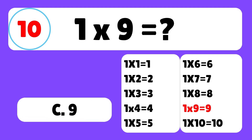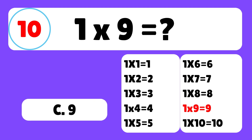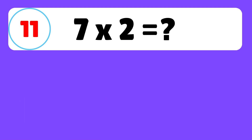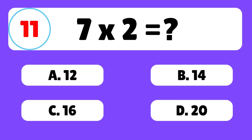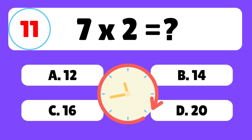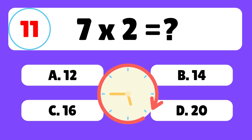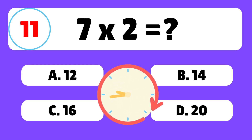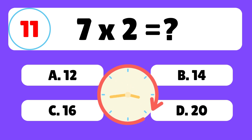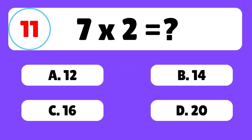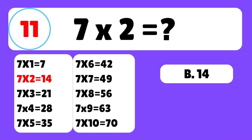Question 11. What is 7 times 2? The answer is B. 7 times 2 is equal to 14.